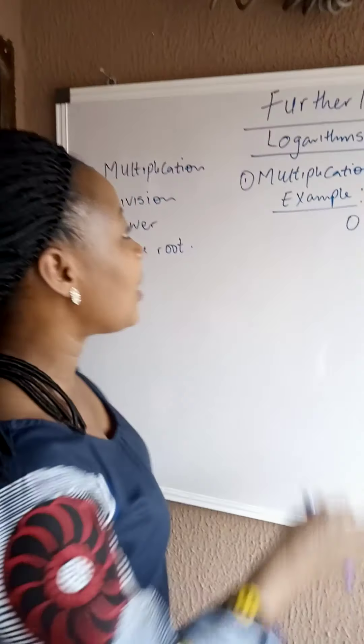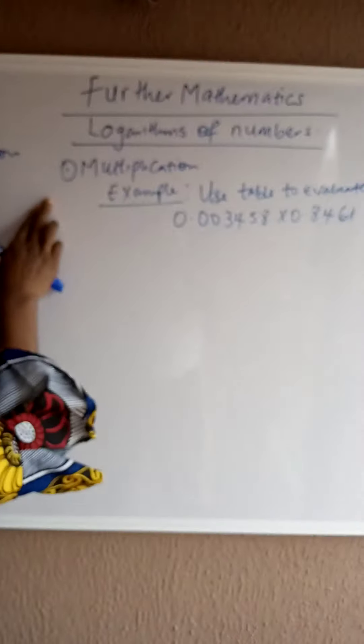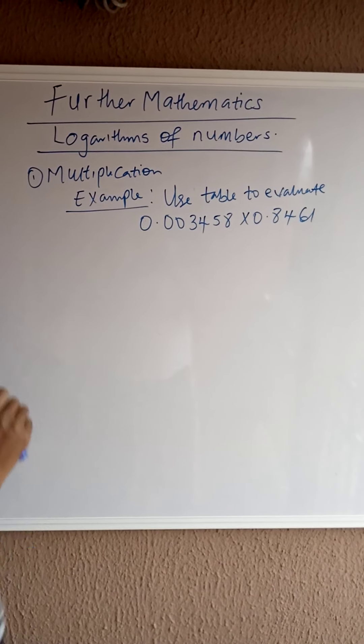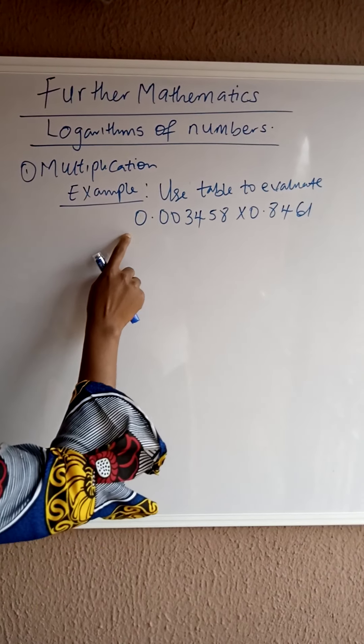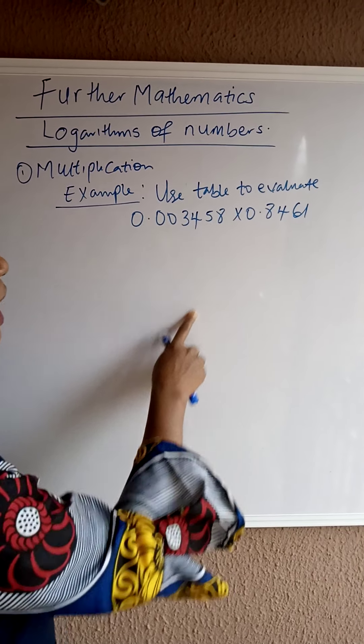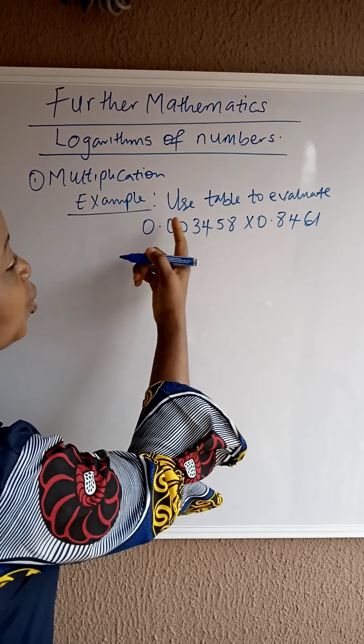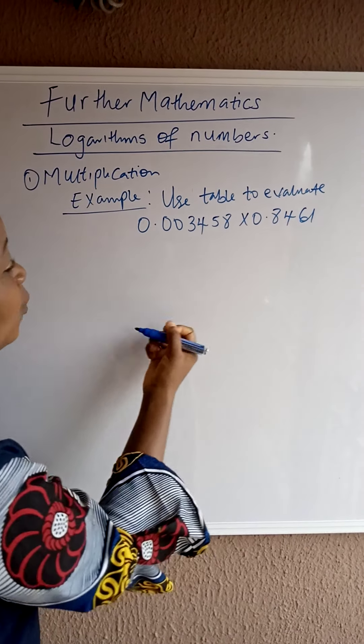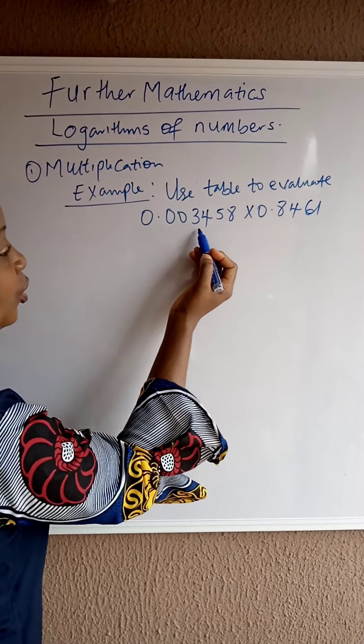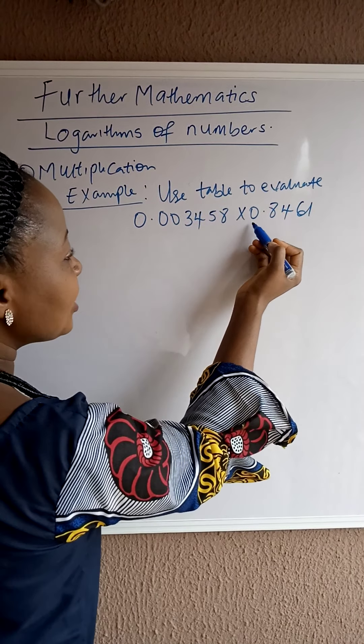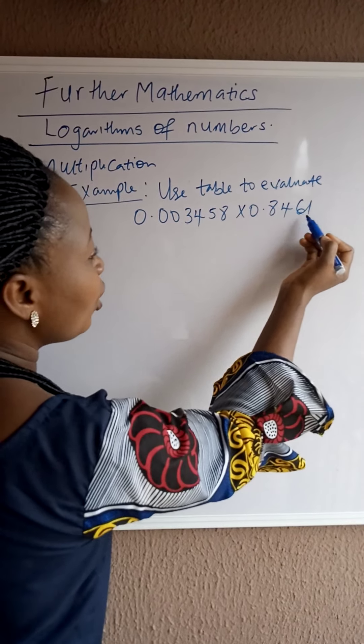In my video right now, I'm still on the multiplication, logging of numbers. I promise that in my next video, we are going to do the one that carries a bar. Now, the question says, use table to evaluate 0.003458 multiplied by 0.8461.